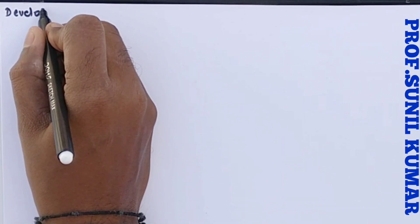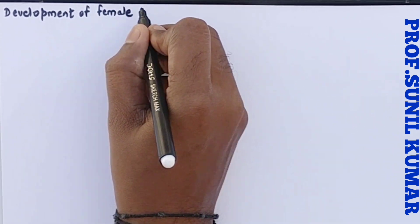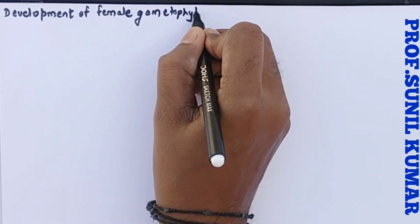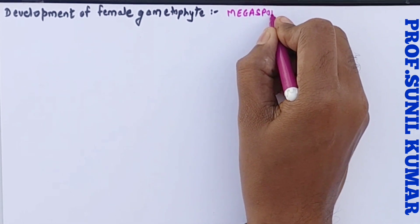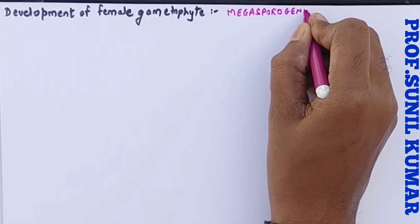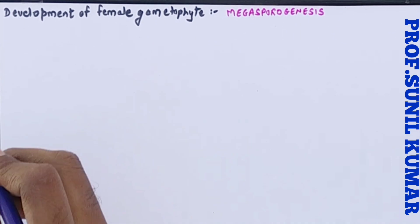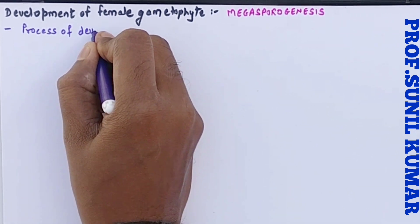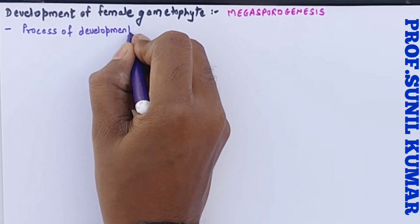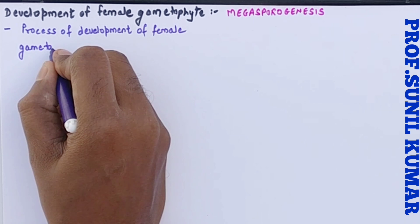In this video I will be discussing one of the most important topics called development of female gametophyte. Development of female gametophyte simply means development of mega spore, and the process of development of mega spore is known as megasporogenesis. Mega spore is the female gametophyte and genesis means development, so megasporogenesis is defined as the process of development of the female gametophyte.